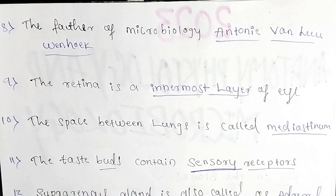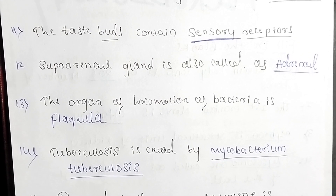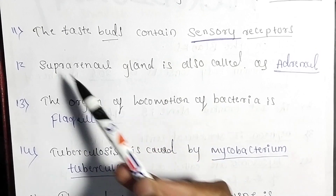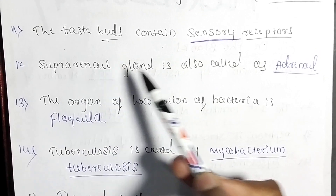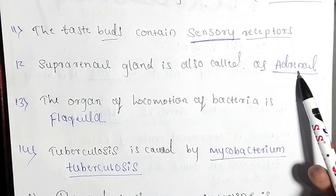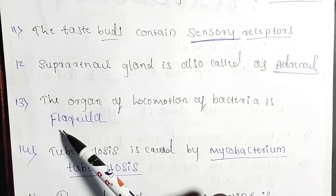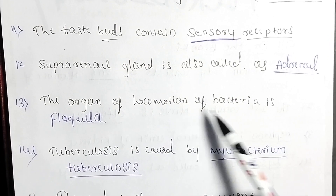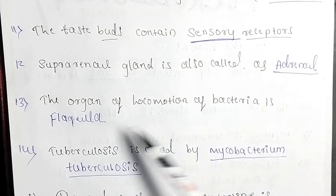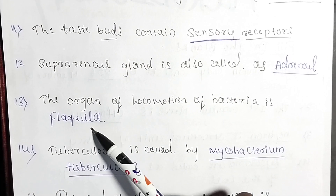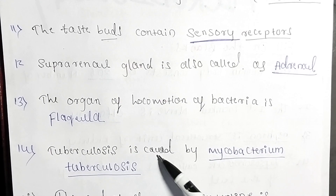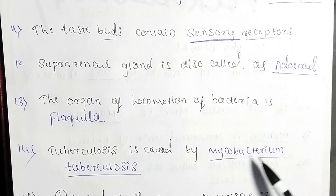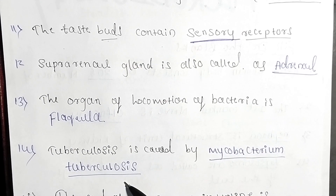The suprarenal gland is also called the adrenal gland. Next question: the organ of locomotion of bacteria is the flagella. Next: tuberculosis is caused by Mycobacterium tuberculosis.